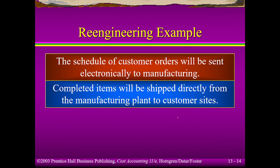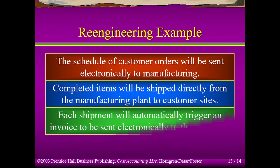Completed items will be shipped directly to the customer from manufacturing, eliminating the three-party system of storing in the warehouse, then picking, then delivering to the customer. Technology support means that each shipment will trigger the preparation of the invoice, so the back-and-forth processes are avoided.